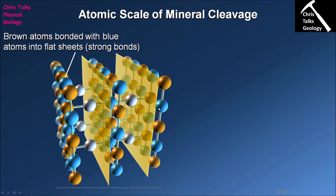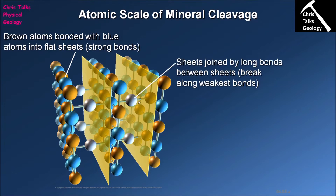In between these sheets of blue and brown atoms we have these gray atoms, which are helping to bridge the gap between the sheets. The bond length here is quite long, and typically the longer the bond, the weaker the bond will be. Bond strength also changes depending on what type of bond you have, but we're focusing purely on bond length here. This longer bond is therefore naturally weaker, and so when our mineral begins to break it's going to preferentially break along the weakest point — the gray atoms holding these sheets together — along this plane of weakness.